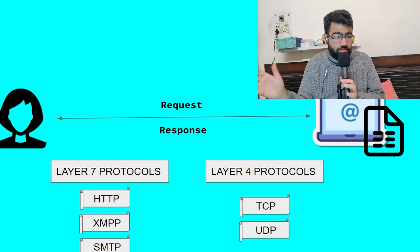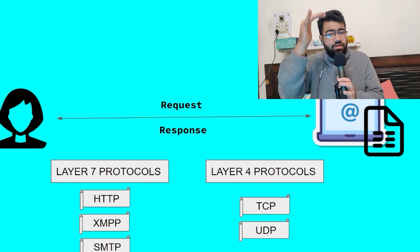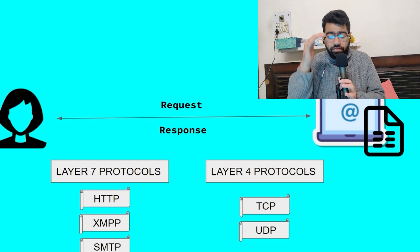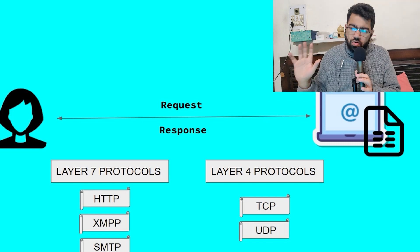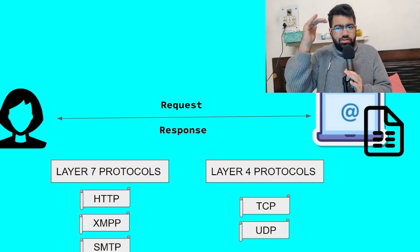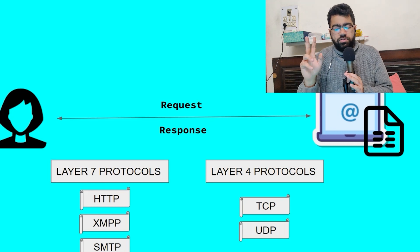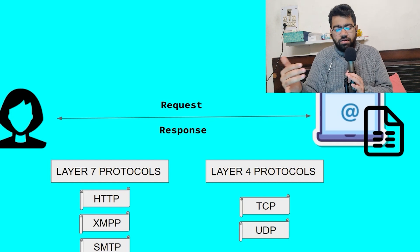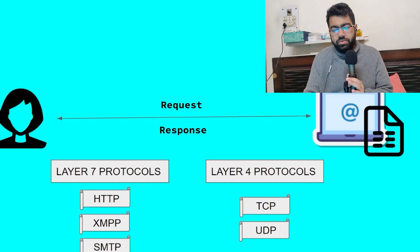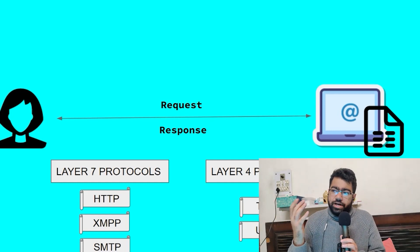HTTP is a layer 7 protocol. In networking there are seven layers: the seventh layer is the application layer, the fourth layer is the transport layer — we just need to talk about these two. On layer 7, protocols include HTTP, XMPP, and SMTP. On layer 4, there are just two protocols: TCP and UDP.